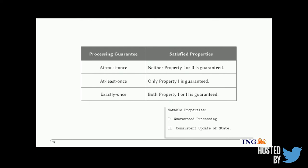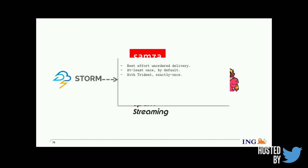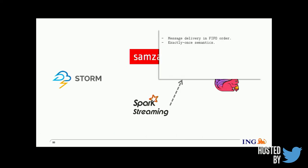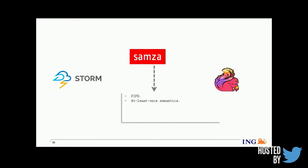Looking at how different systems offer these guarantees: Storm offers only at-least-once, but with the Trident extension it can offer exactly-once semantics. Spark supports exactly-once semantics. Flink also supports exactly-once semantics and recently added transactional support via streaming ledger. Samza has a Kafka-backed channel and supports at-least-once semantics.